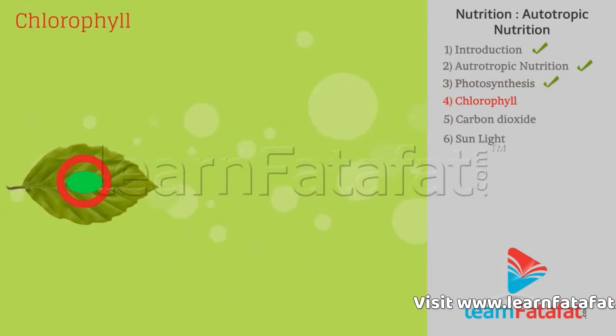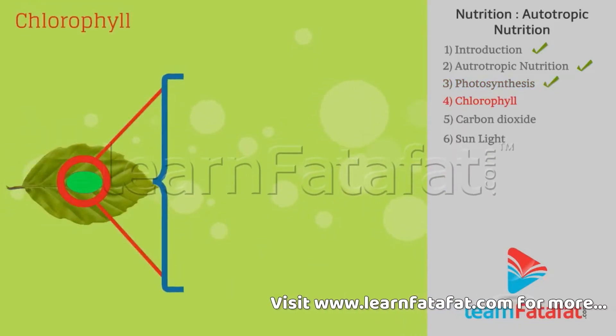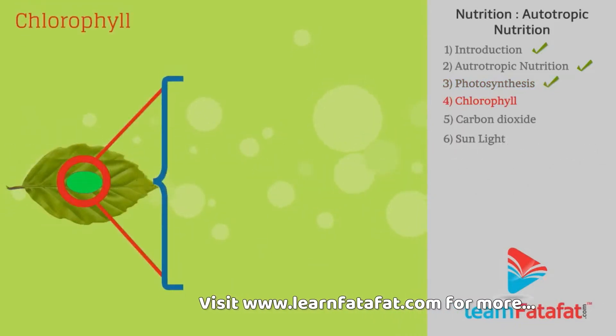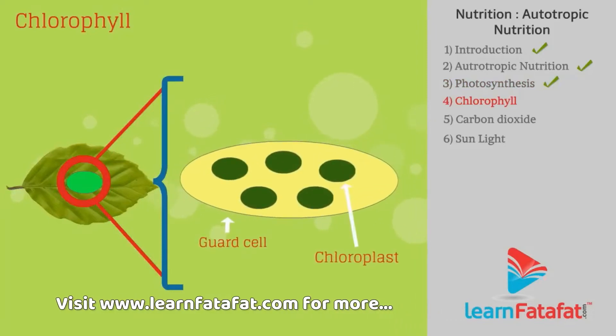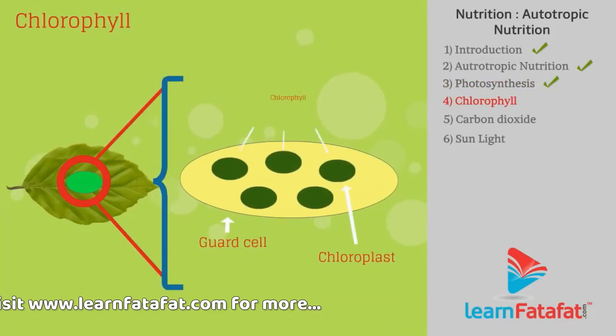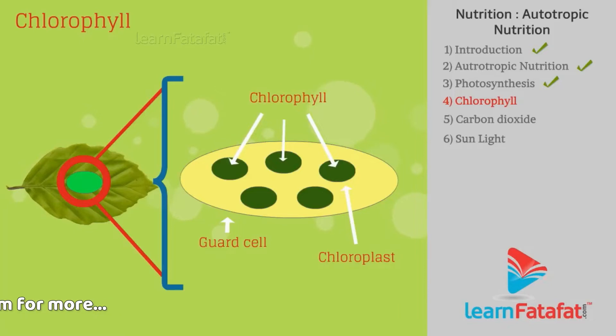Chlorophyll: Some cells in green leaves contain green dots known as chloroplasts, which contain a green colored pigment called chlorophyll.